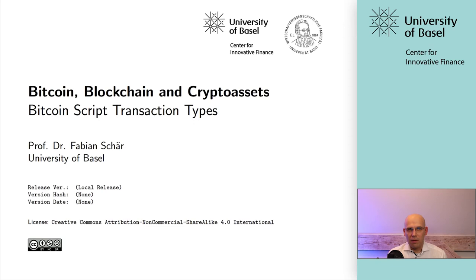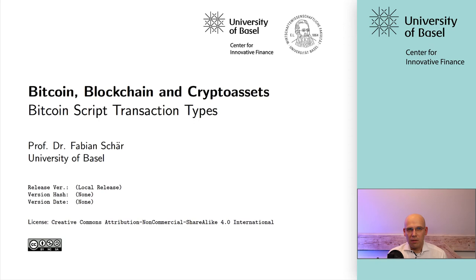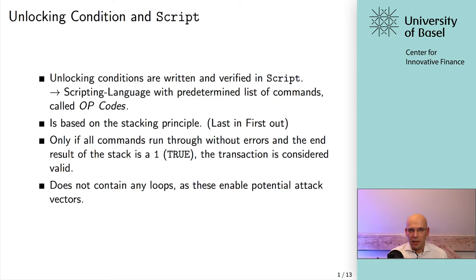Let's get started with the various transaction types and the unlocking conditions that can be used in the context of Bitcoin transactions. These unlocking conditions are written in something called Script, which is a scripting language. You have some predetermined commands in there, which are referred to as OP codes. You can quite flexibly design what exactly the unlocking conditions are using these OP codes. The most straightforward ones, as you have already seen in previous examples, are simple signatures — where this output, this unspent transaction output, can be spent by someone who is able to provide a signature that can be verified with a specific public key.